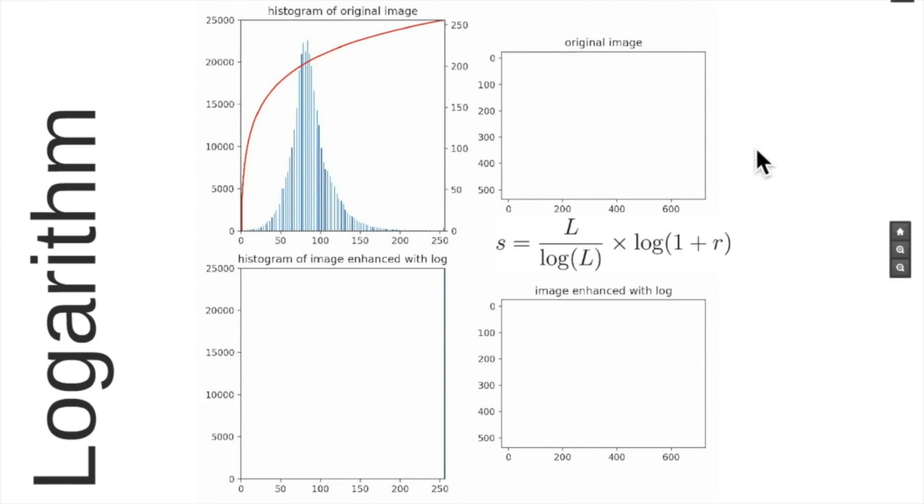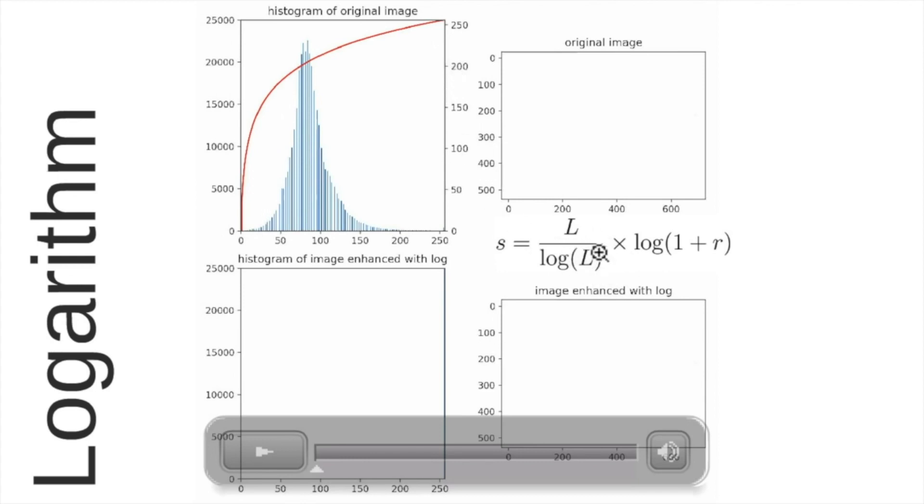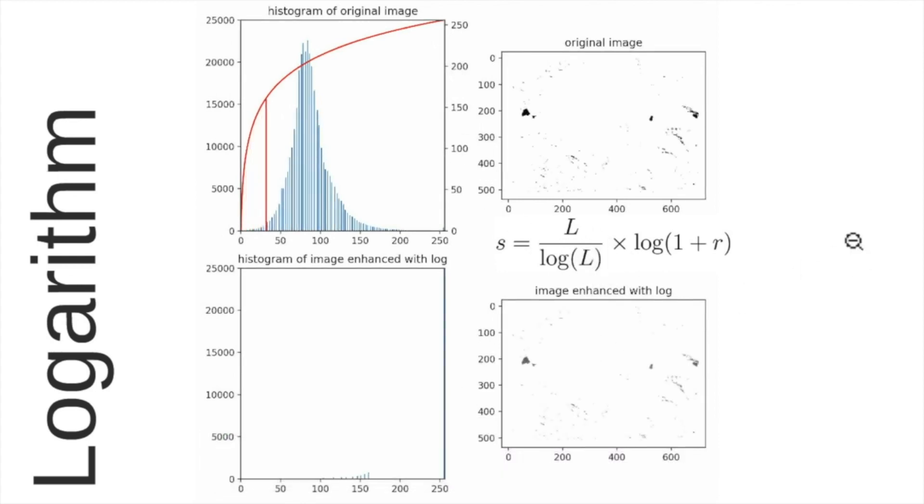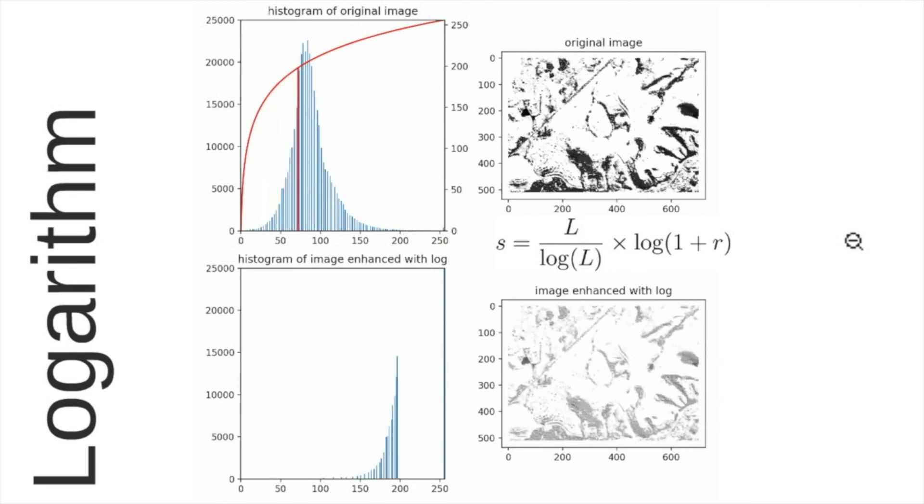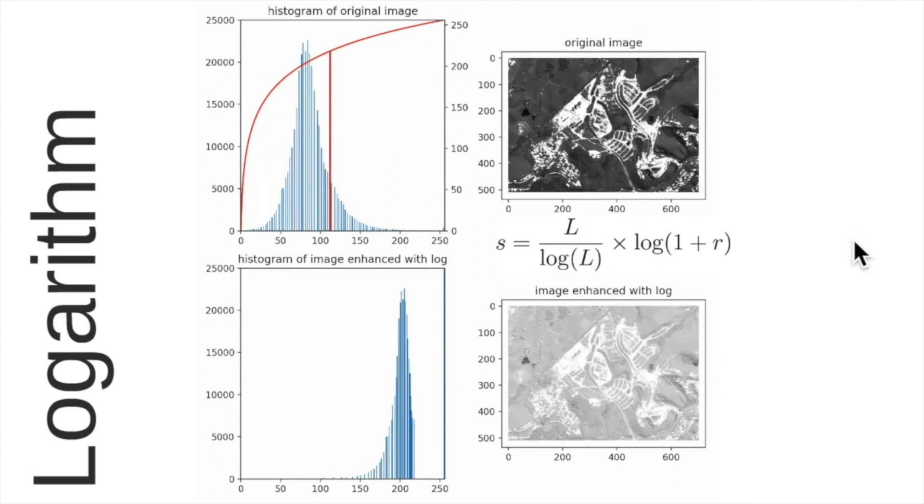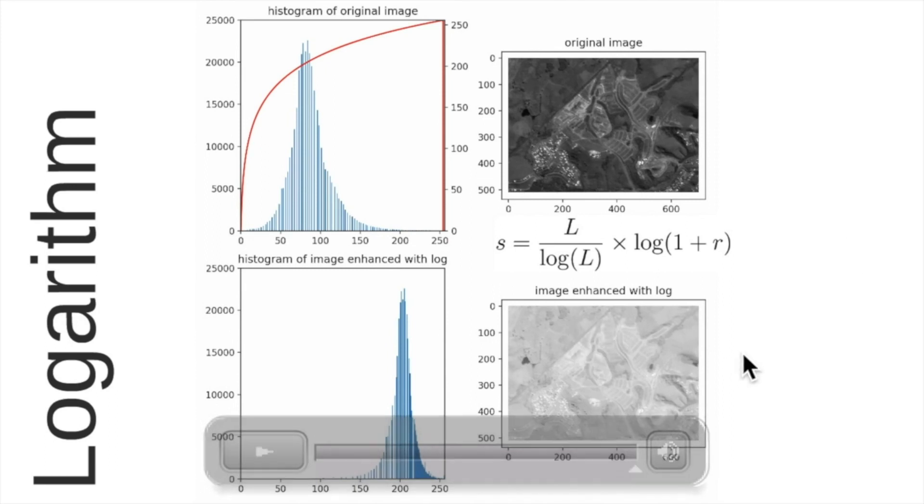The logarithm we have here is the shape of the logarithm function and here is the equation that we apply. The original image now is shown as long as the red bar goes from left to the right and in the histogram, the bottom part shows the output histogram of the image enhanced with logarithm. This is the original image, this is the output image.